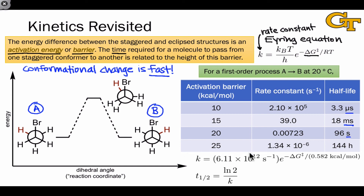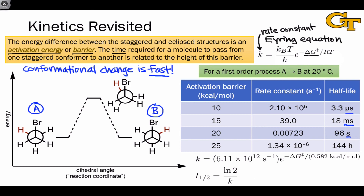As a quick aside, these numbers were calculated by plugging values into the Eyring equation: Boltzmann's constant, Planck's constant, a temperature of 293 Kelvin, and R in units of kilocalories per mole per Kelvin. The half-life is then calculated using the first-order half-life equation: the natural log of 2 divided by the rate constant.